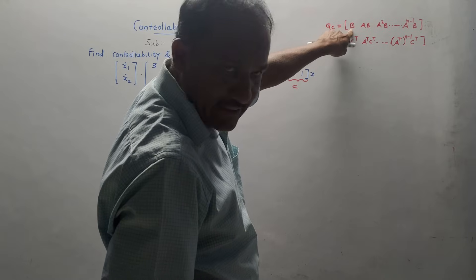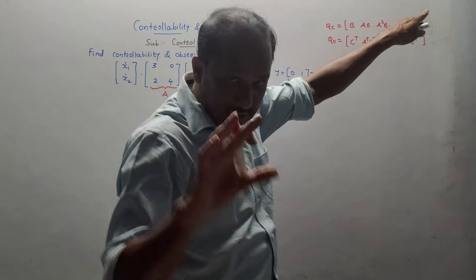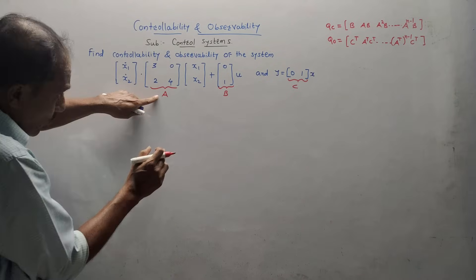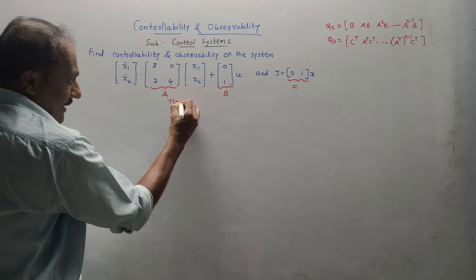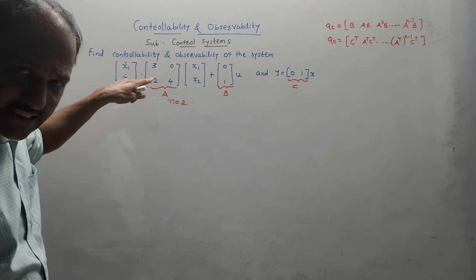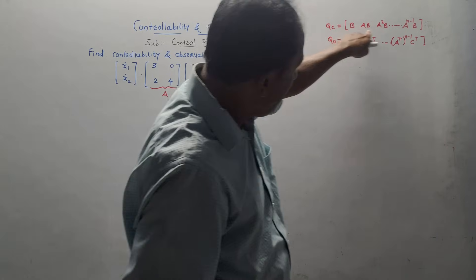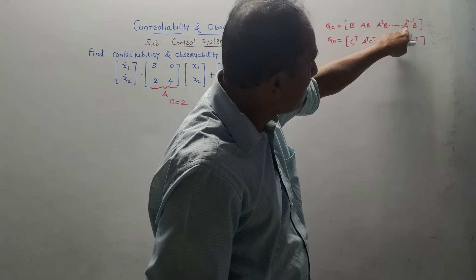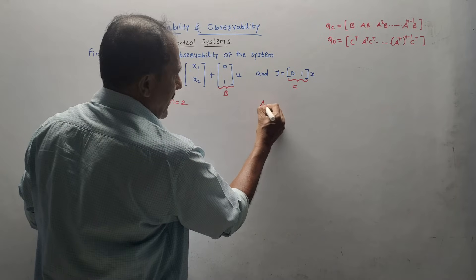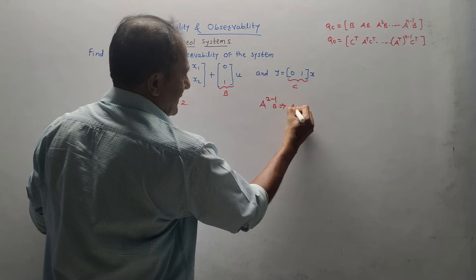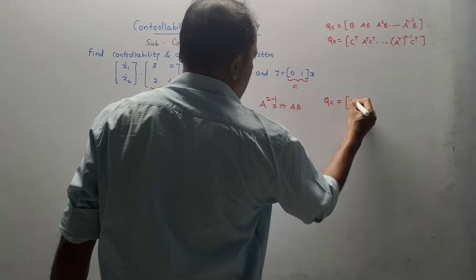For controllability, look at the formula for QC. The first term is matrix B, the second term is A into B, the third term is A squared B, and the last term must be A raised to N minus 1 into B. The size of matrix A is 2 rows and 2 columns, so 2 by 2 — that means the value of N is equal to 2. So the last term must be A raised to 2 minus 1 into B, which means the last term is AB. So the matrix QC will be B and AB.